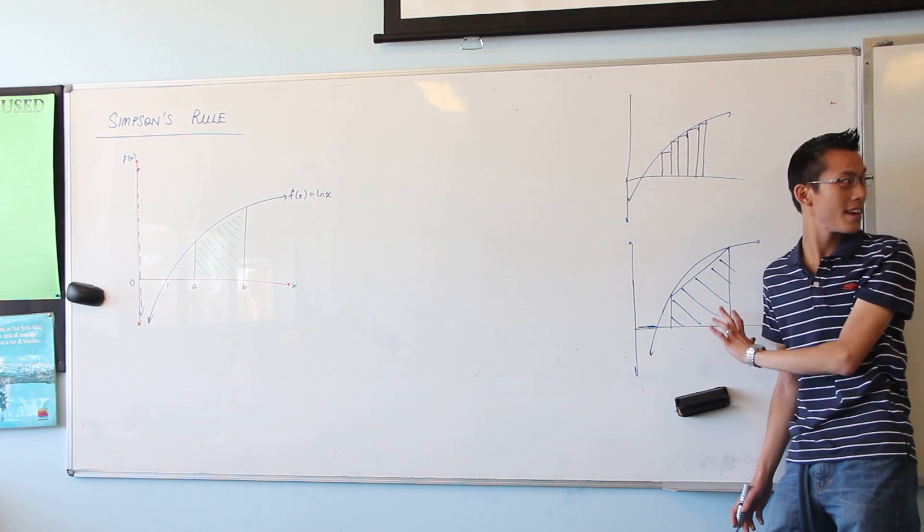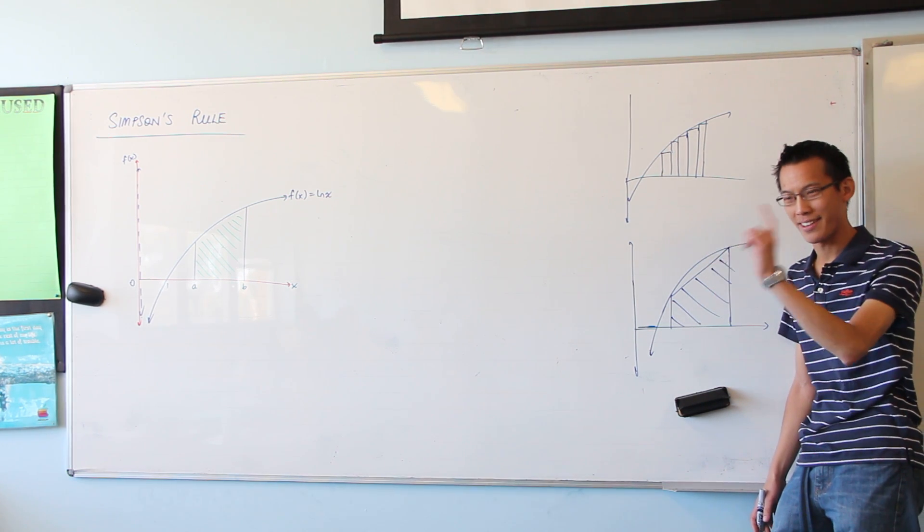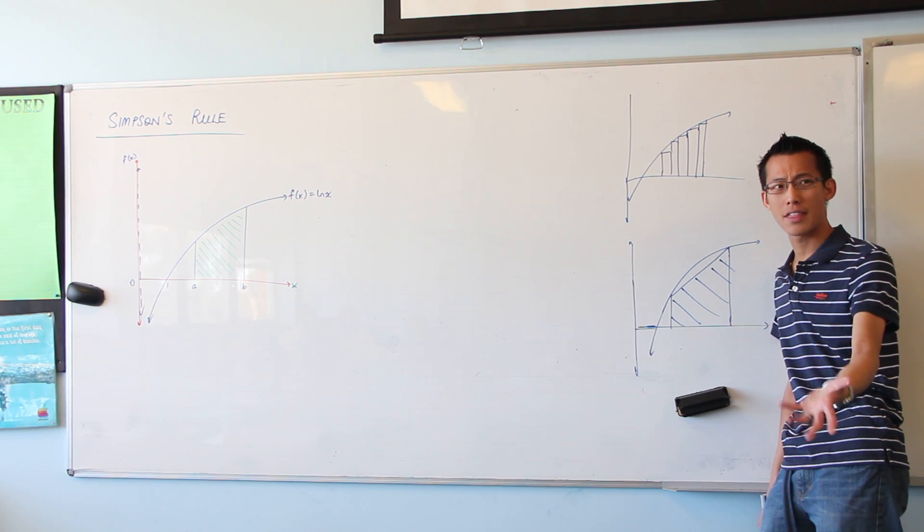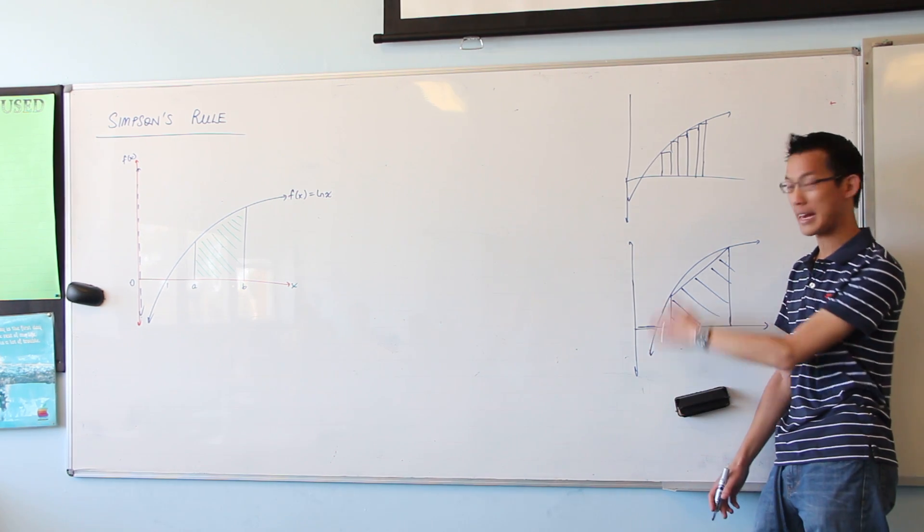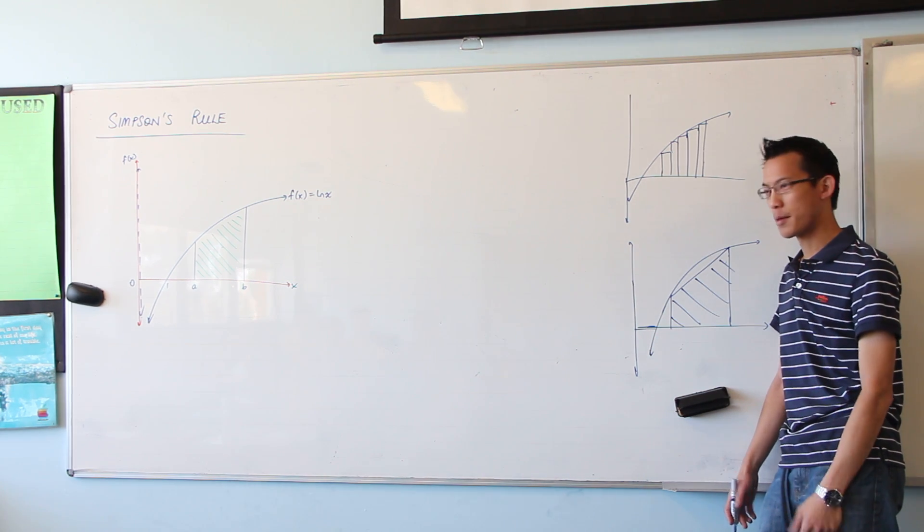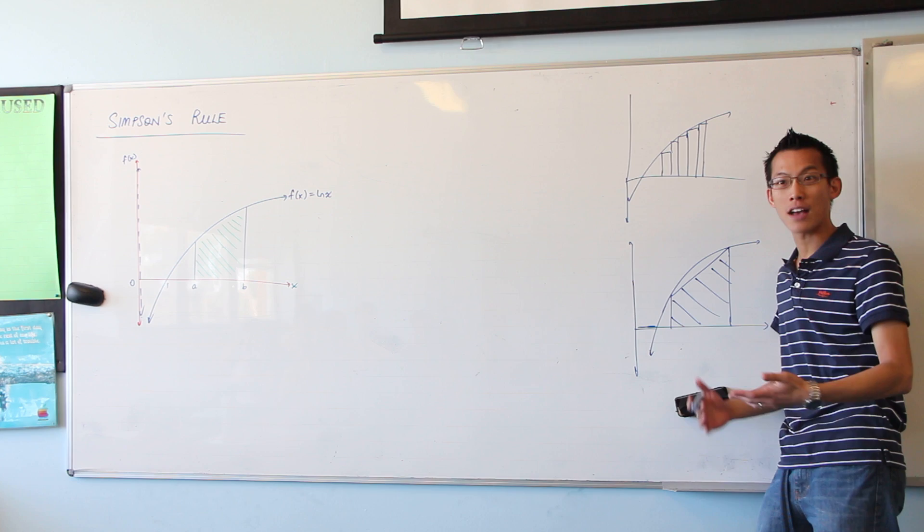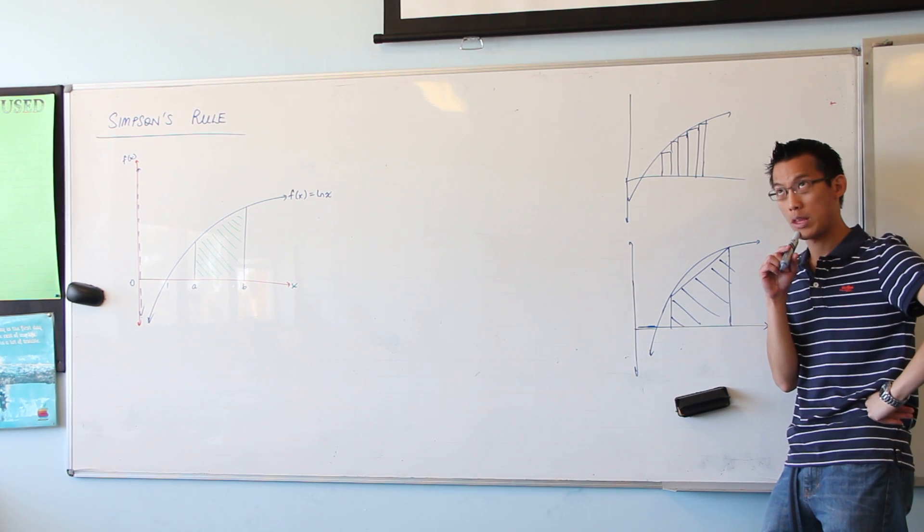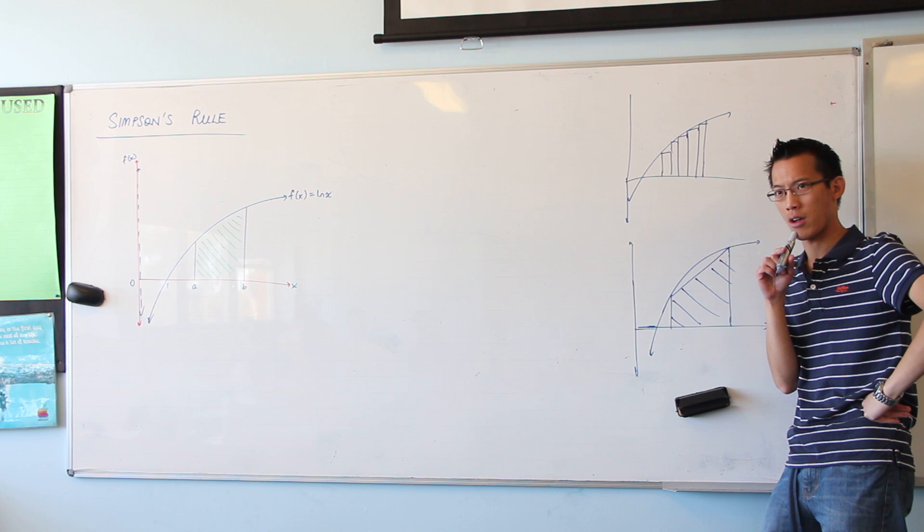Now, rectangles, trapezia - I actually looked it up by the way, it is trapezia. The disadvantage for them in terms of using them to approximate areas under curves - curves. The problem is they don't have curves. They are straight.